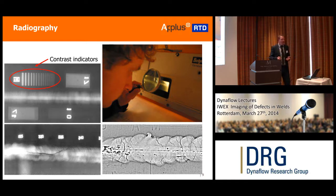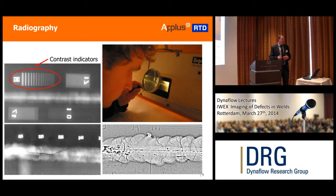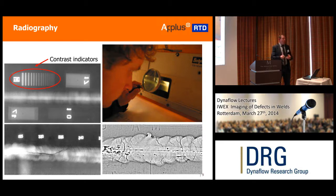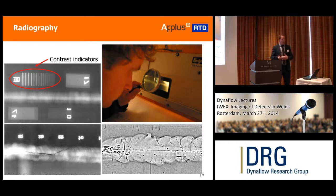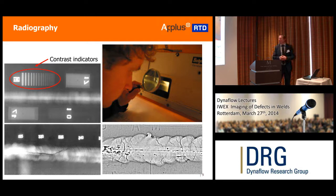Also, one limitation of radiography is that you need radiation, which is hazardous for people. Therefore, radiography is often done during night hours — a practical limitation. And it takes some time to make these images because you need to develop the film. So it has some benefits — you have a method to detect defects — but it does have limitations: sometimes you might miss it, sizing is not really possible, and it takes some time.